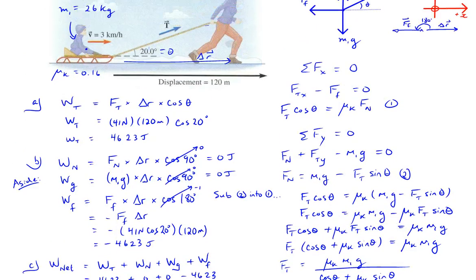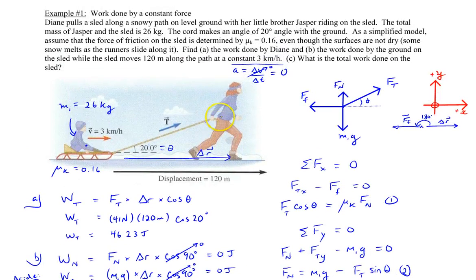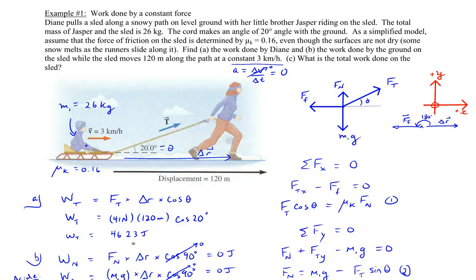In summary: Diane does positive work of 4623 joules on Jasper and the sled. At the same time, friction does exactly −4623 joules of negative work, dissipating that same amount of energy out of the system — warming the sled and ground as it converts to thermal energy. That's it for example number one.